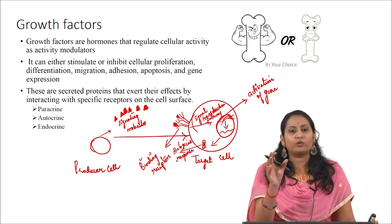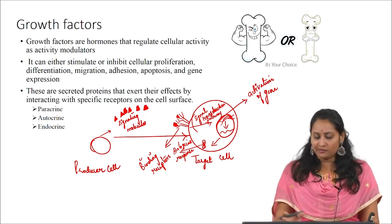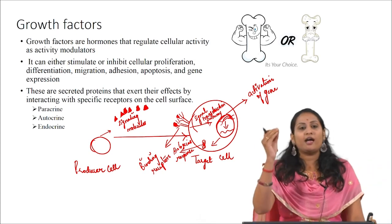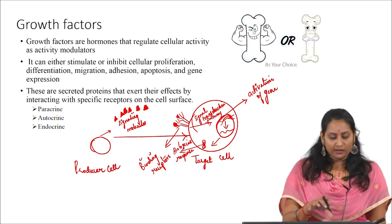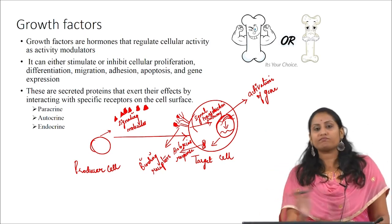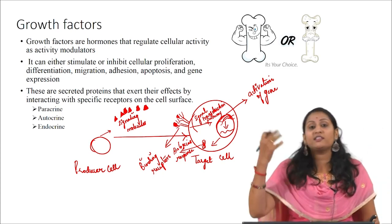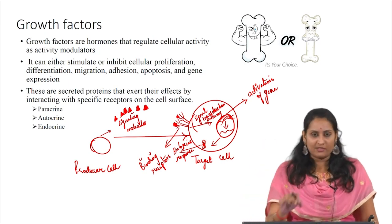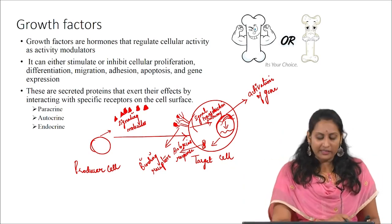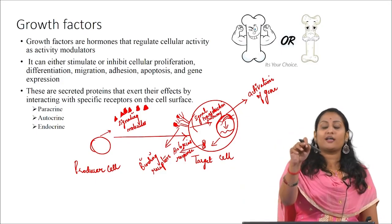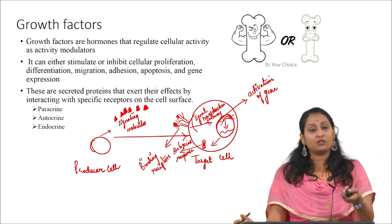In general, growth factors are secreted proteins that exert their effects by interacting with specific receptors on the cell surface, through paracrine — where they act on neighboring cells — autocrine, where they act on the same cell itself, and endocrine, where the signal is transferred through the blood to the targeted site.